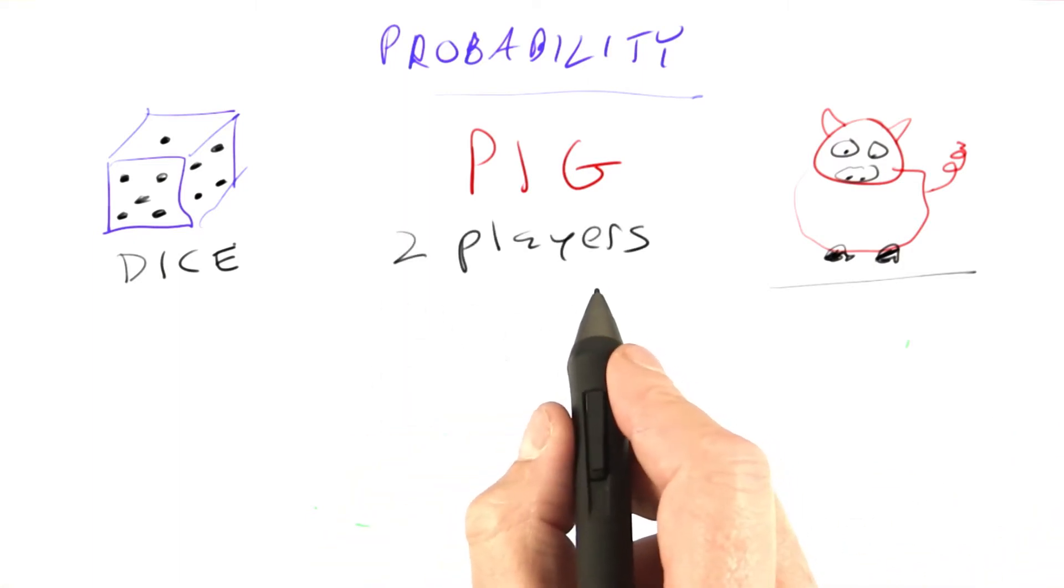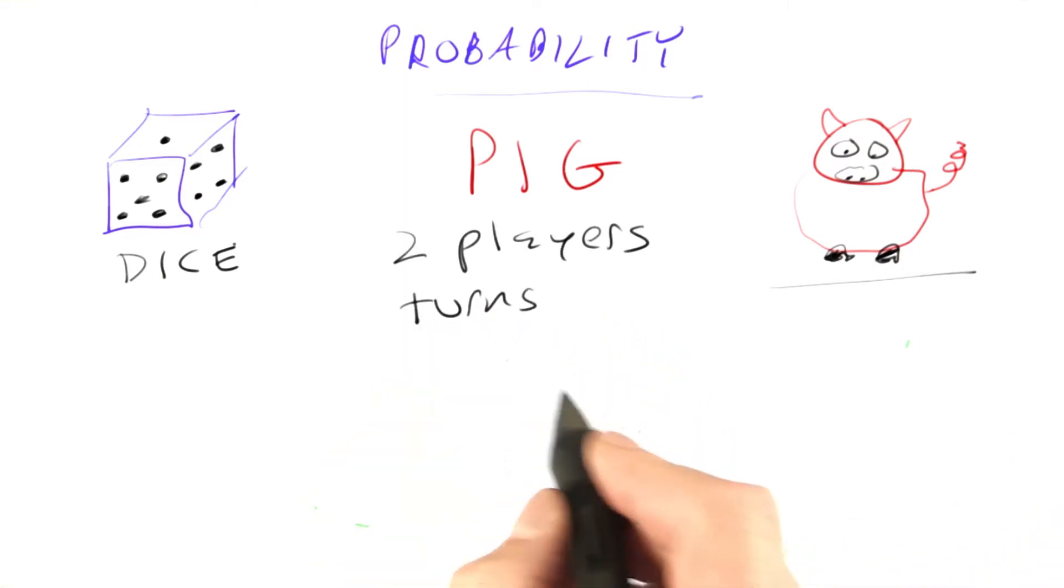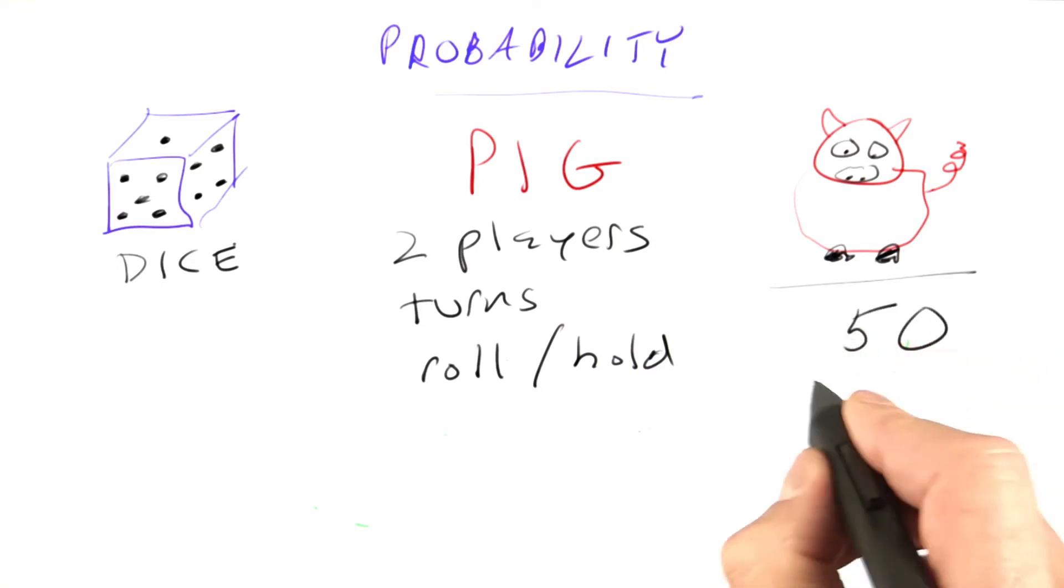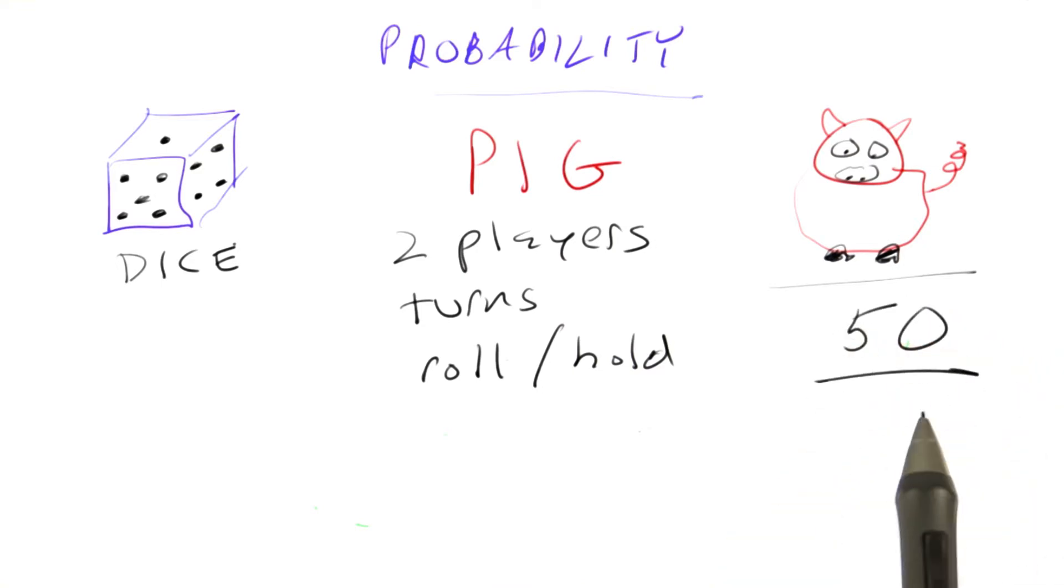There are two players, although you could play with more. The players take turns, and on his turn, a player has the option to roll the dice, a single die, as often as he wants, or to hold, to stop rolling. The object of the game is to score a certain number of points. We're going to say 50 points. 100 is more common, but 50 will be easier on the Udacity servers in terms of the amount of computation it requires.